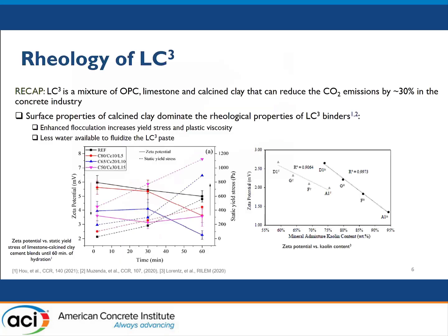A quick recap: LC3 is a mixture of OPC, limestone, and calcined clay that can reduce CO₂ emissions by 30% in the concrete industry. We know that calcined clay dominates the rheological properties of LC3 due to its surface properties. It has a very high water demand and is a heterogeneously charged material that enhances flocculation. It is very fine and reactive, and increases the yield stress and viscosity.